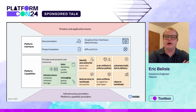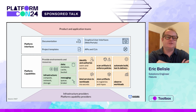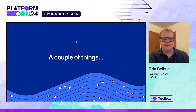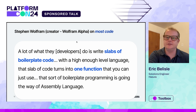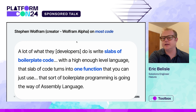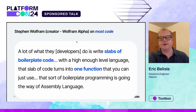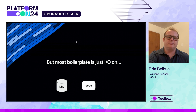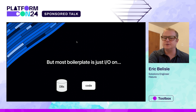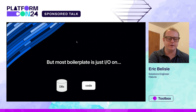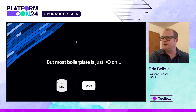From a traditional platform engineering perspective, this might look familiar. This is from the Cloud Native Computing Foundation — essentially a mapping of all of the things that your platform engineering team is capable of handling. We found a couple of things when it comes to API development specifically. This quote from Stephen Wolfram resonates really well with us: "A lot of what the developers do is write slabs of boilerplate code. And with a high enough level of language, that slab of code turns into a single function that you can just use. Sort of that boilerplate programming is going the way of assembly language." The idea is that most of this boilerplate is just input/output on either a data source, a database, or some kind of code — could be an API endpoint or a webhook that responds with some sort of data.